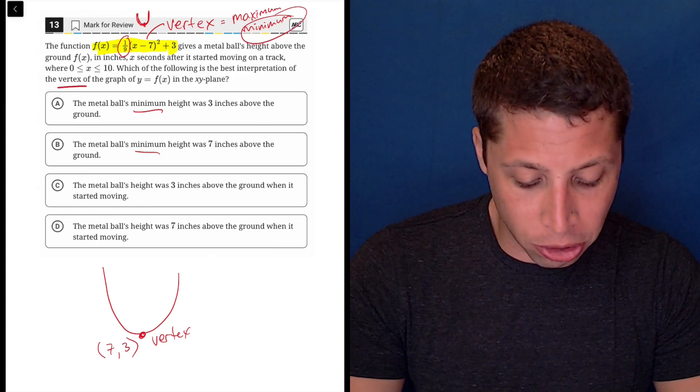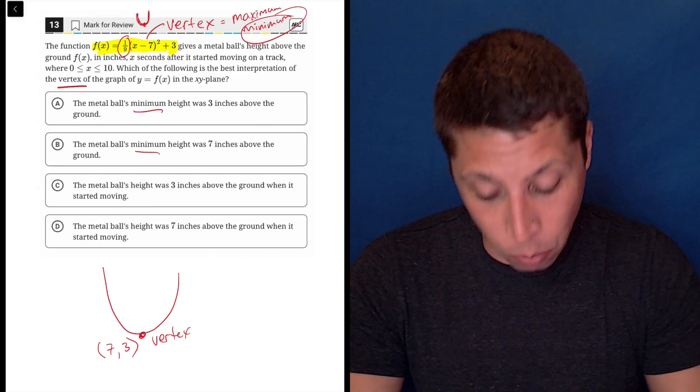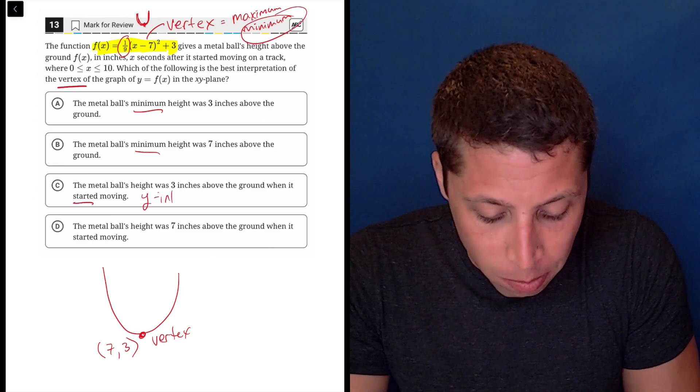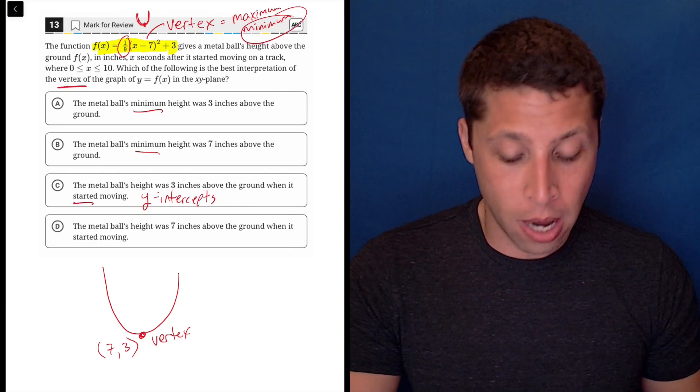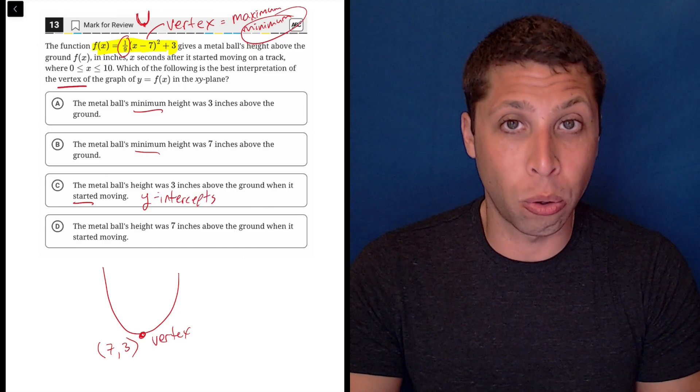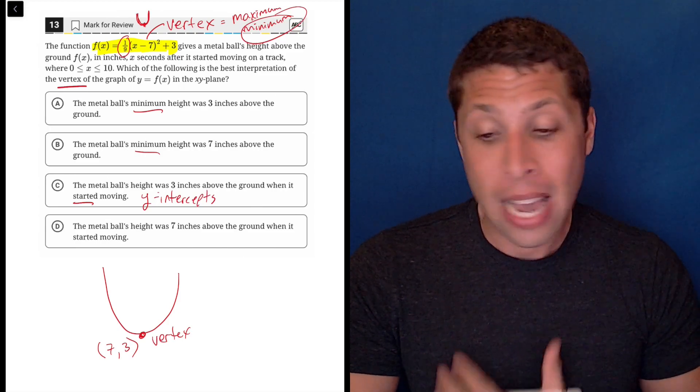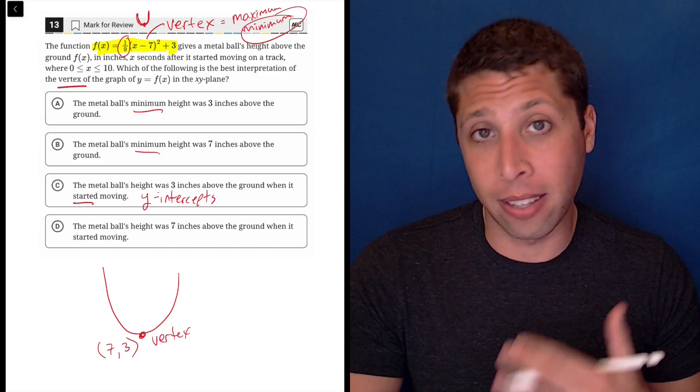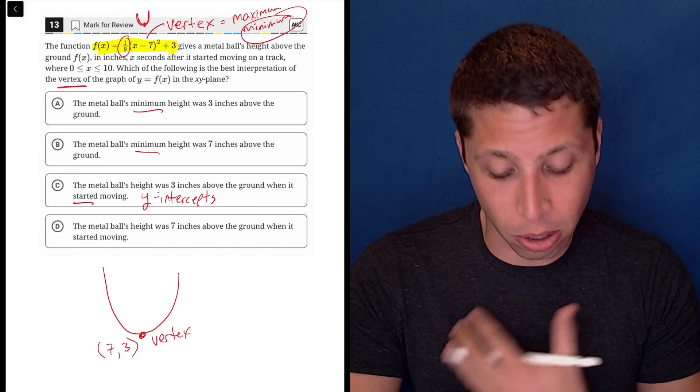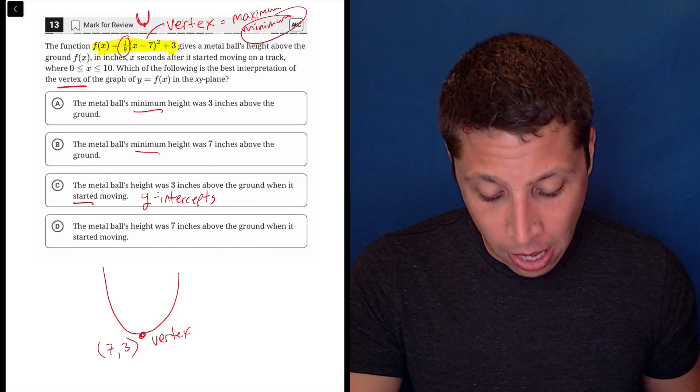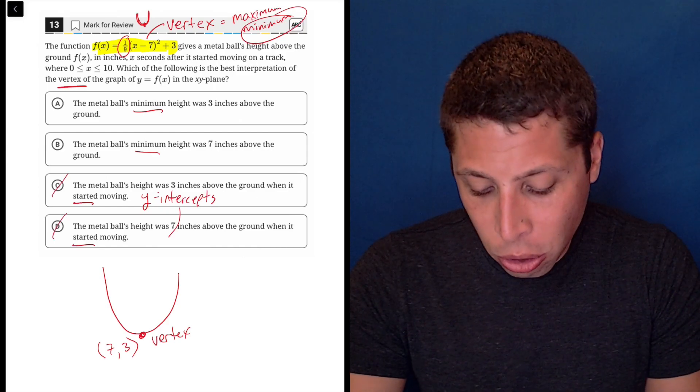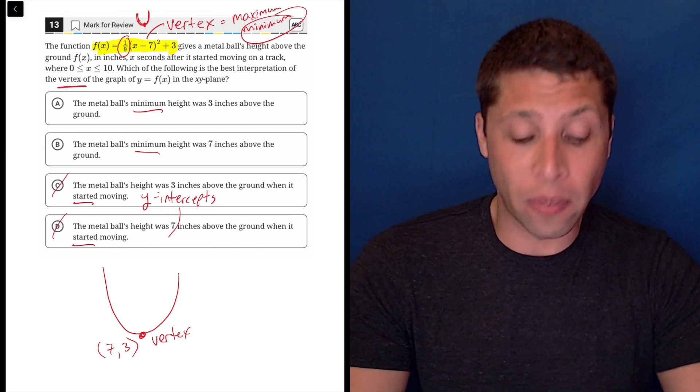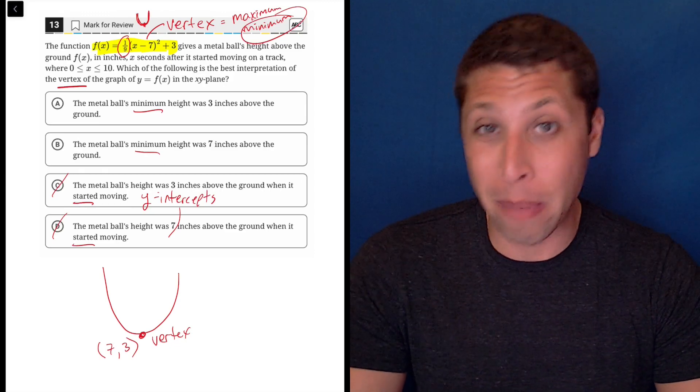C, the metal ball's height was three inches above the ground when it started moving. Well, started reminds me of the idea of y-intercepts, we've seen that in other questions before. Basically a starting point in a story is going to be represented by the y-intercept. That value is not the vertex in this case, it is not part of the equation, so it's not going to be the three or the seven. And the same thing here, started moving, again we've got y-intercept. So these two are at least wrong, and now you're done with 50-50 shot just by knowing that a vertex and a minimum are the same thing.